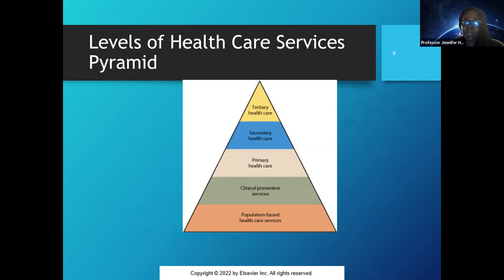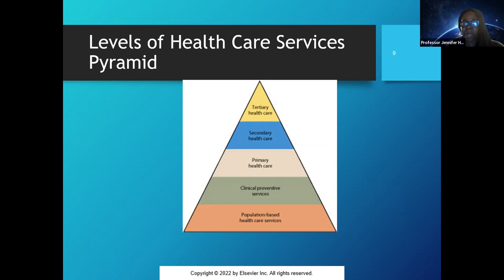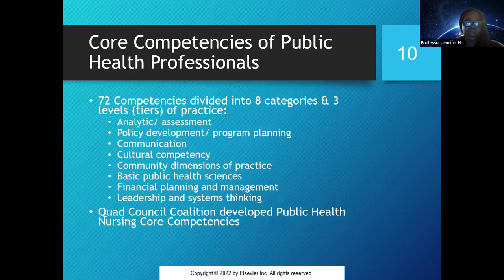These are three areas to be aware of: Primary health care includes both primary care and public health services designed to meet the basic needs of the community. Secondary health care services are designed to detect and treat disease at early stages. Tertiary care is designed to limit the progression of disease and disability. You'll hear those three terms — primary, secondary, and tertiary — throughout the entire semester.